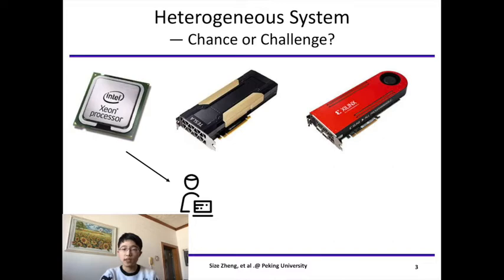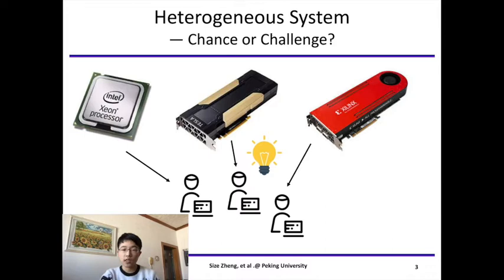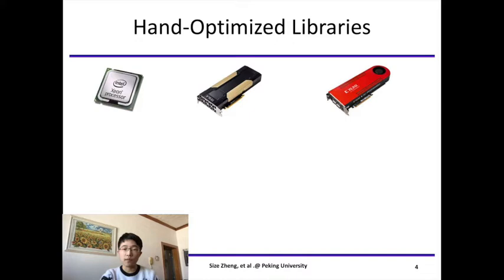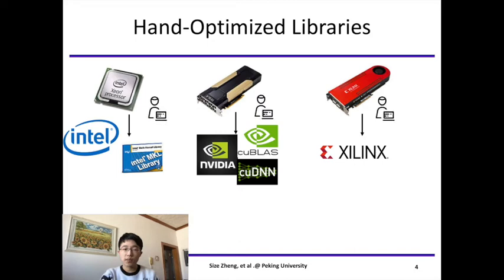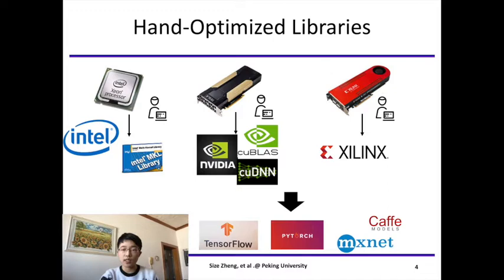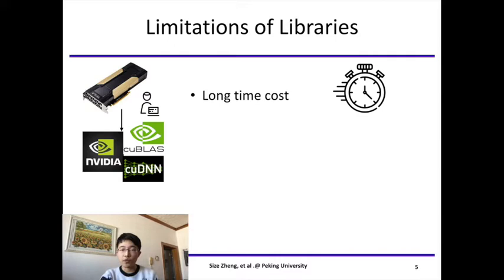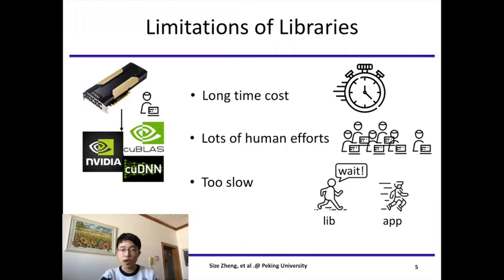As a result, only by teamwork can they achieve the final task, which shall take a long time and huge efforts. To fill the gap between hardware and application, many vendors provide highly optimized libraries. Typical libraries are cuDNN from NVIDIA, MKL and MKL-DNN from Intel. These libraries provide high-performance implementations of tensor computations and support the ecosystem of all the famous deep learning frameworks such as TensorFlow and PyTorch. But the problem is that these libraries are all hand-optimized, which means they need a long time to come into being, and they require lots of human efforts. As a result, they will fall far behind the rapid evolution of applications and algorithms.